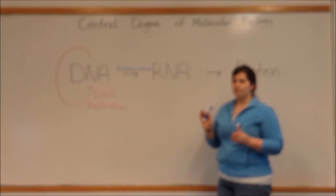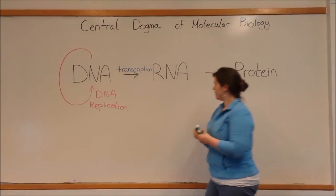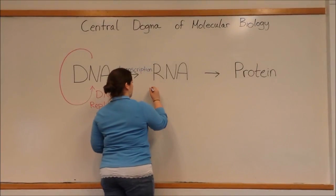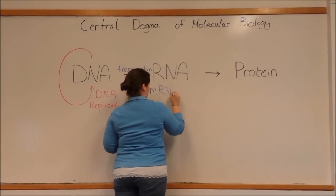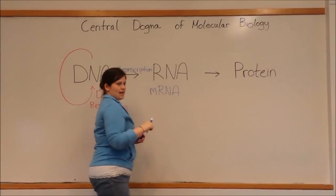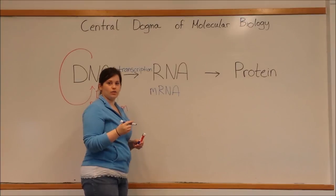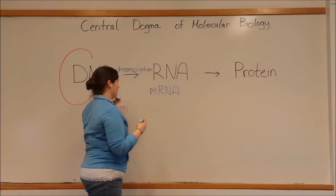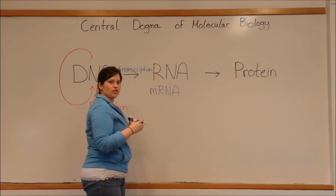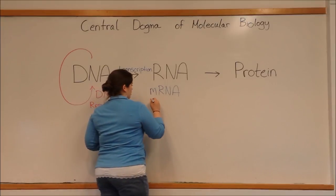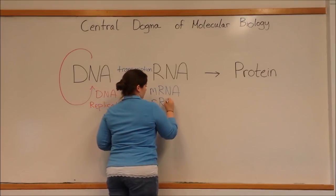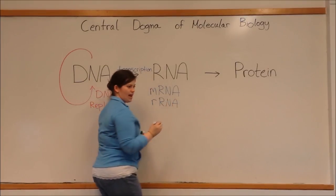There are three main types of RNA. The first is mRNA. Here the M stands for messenger RNA. So this is the RNA that contains all of that genetic information from the DNA. There is also rRNA or ribosomal RNA.